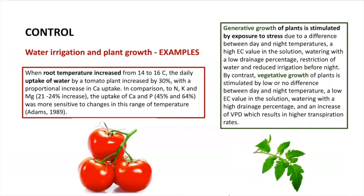Irrigation can be a complex topic. The more you learn about it, the more you will find things that you never knew before about the impact of irrigation on crop development. For example, in tomato, we know that different temperatures at the root zone can change not only how the plant takes up water, but also nutrients. Nutrient uptake can be different depending on temperature, promoting uptake of specific nutrients.